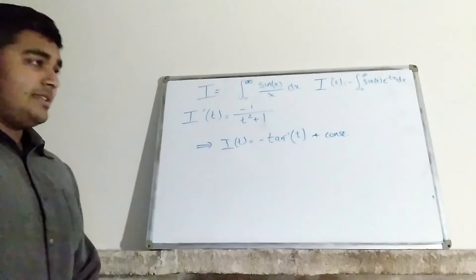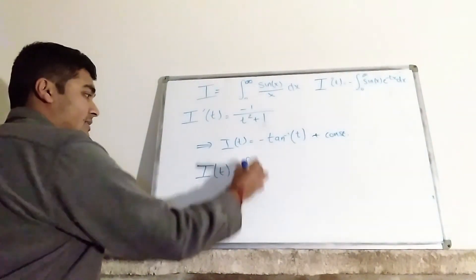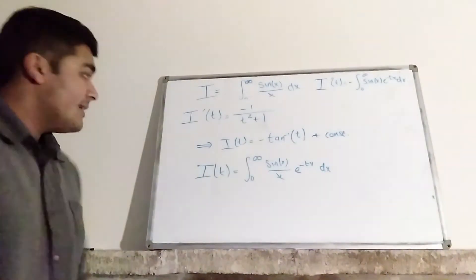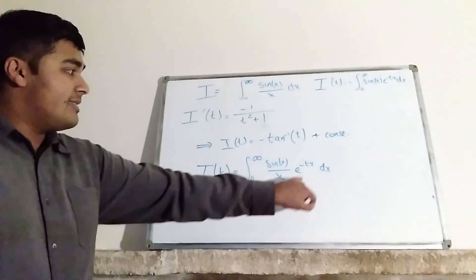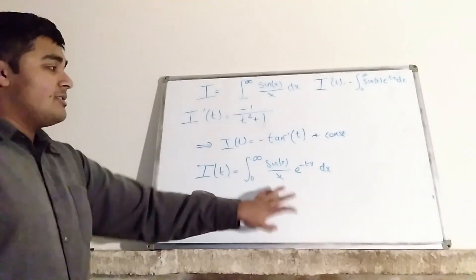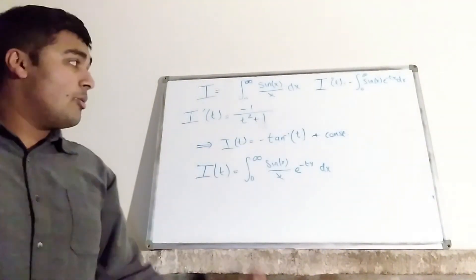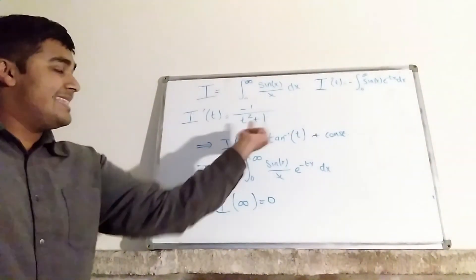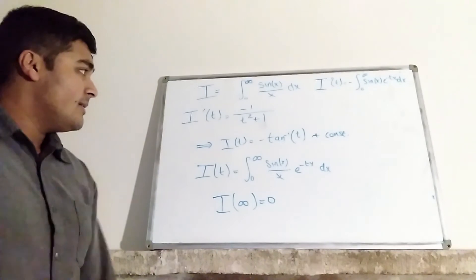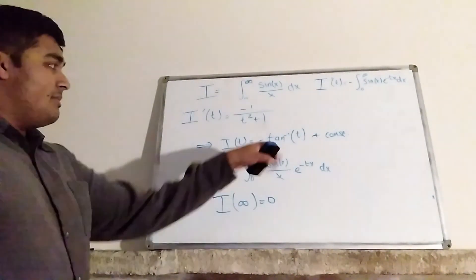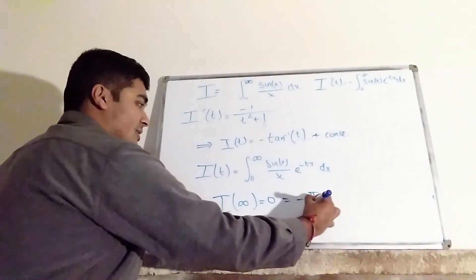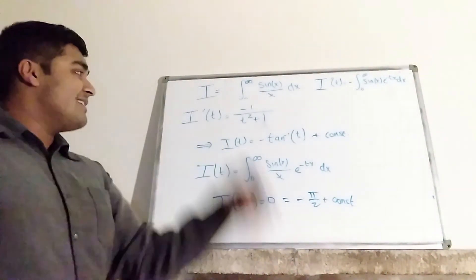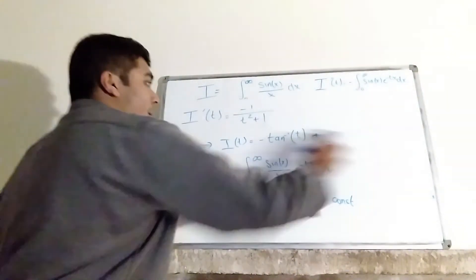Recalling the definition: I(t) is the integral from 0 to infinity of sin(x) over x times e to the negative tx dx. When t goes to infinity, the exponential e to the negative tx goes to 0, and since sin(x) over x is bounded, the whole integrand goes to 0, so I(∞) equals 0. Plugging infinity into minus arctan(t) plus C gives minus π/2 plus C equals 0, so the constant C equals π/2. Therefore I(t) equals minus arctan(t) plus π/2.